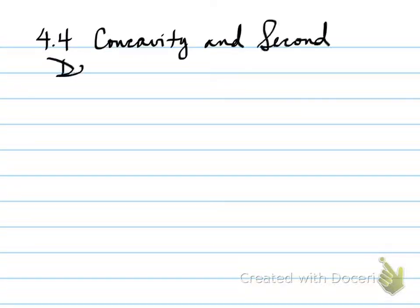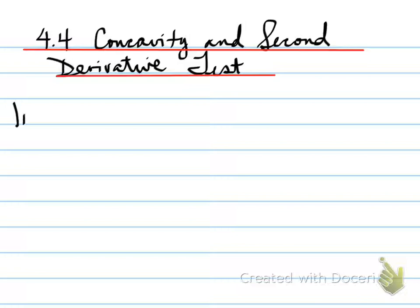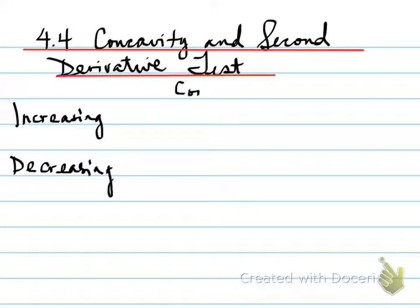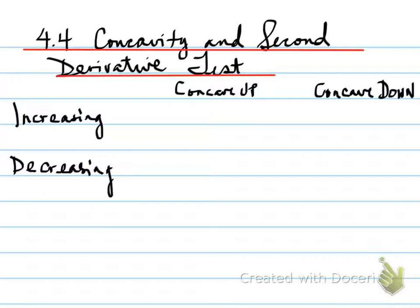4.4 Concavity and Second Derivative Test. In order to look at increasing and decreasing functions, we need to look at whether something is concave up or concave down.